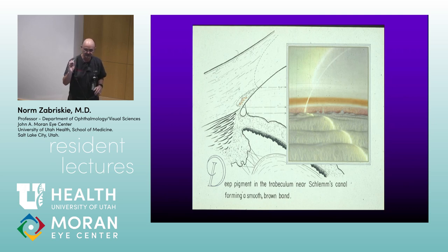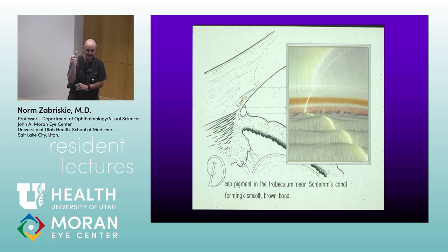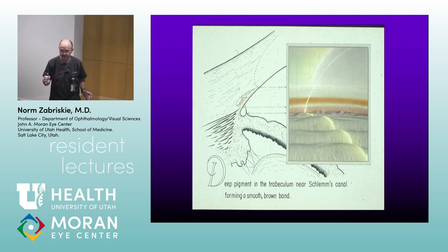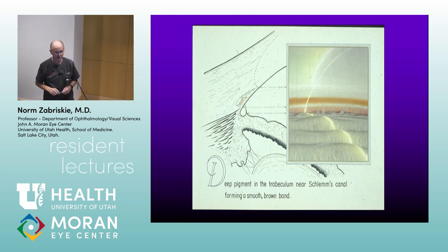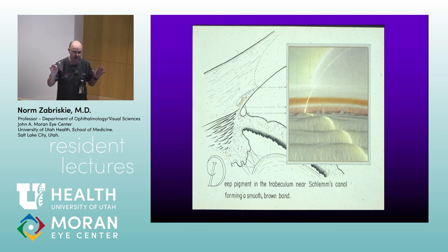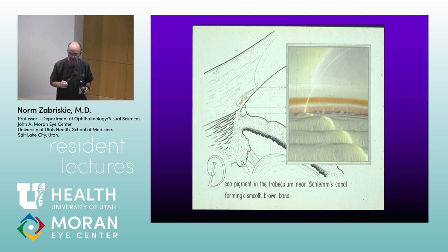Most of you use the hand-held Volk lens — that's an excellent instrument. My favorite is the Zeiss four-mirror. A couple of reasons: I'm not very tall, I have a short arm, and this allows me to comfortably rest my arm on the table and use the lever arm to stabilize at the eye. The optics are excellent, though unfortunately it's the most expensive. The nice thing about the hand-held Volk is you can spin it for a dynamic 360-degree view. There's also the Posner and other four-mirror designs — they're all good. Get used to one, but you've got to have a gonioscopy lens if you're going to do glaucoma.